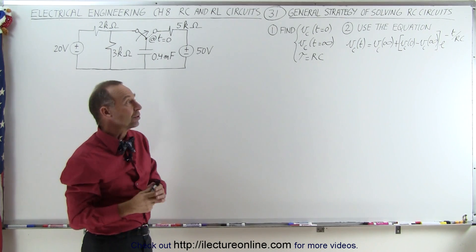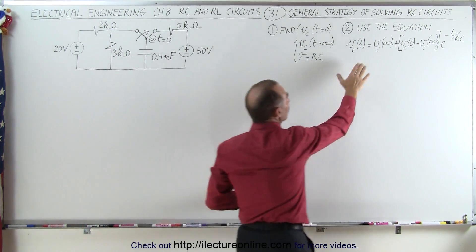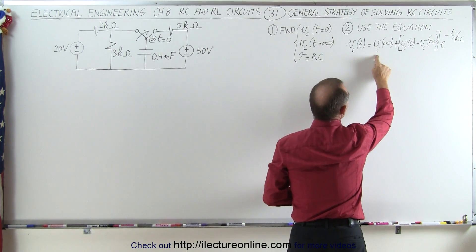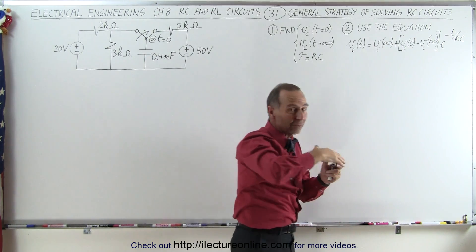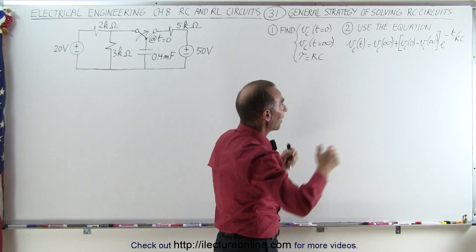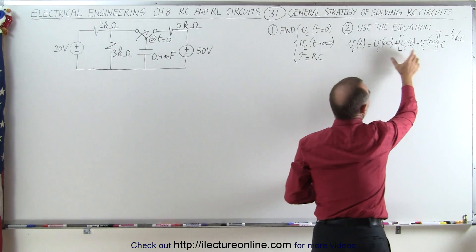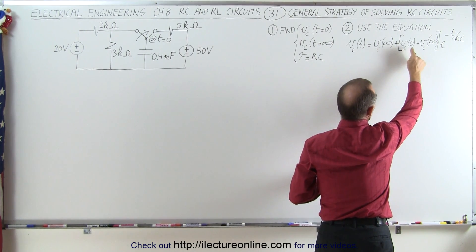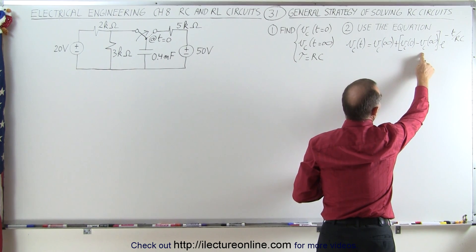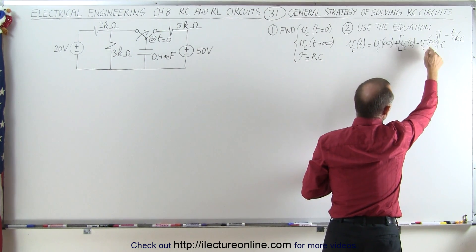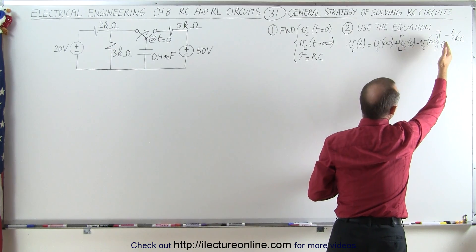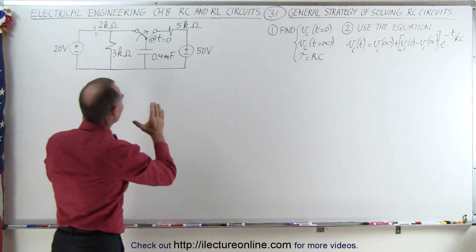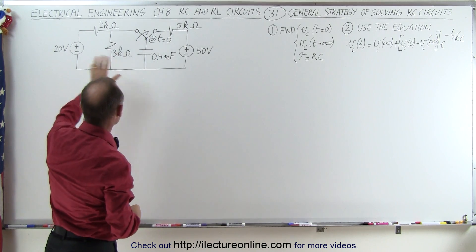Once you have those values, use the equation where the voltage across the capacitor as a function of time equals the voltage across the capacitor at time equals infinity, plus the transient phase: the voltage at t equals zero minus the voltage at t equals infinity, times e to the minus t over RC. Let's use that technique on this particular circuit.